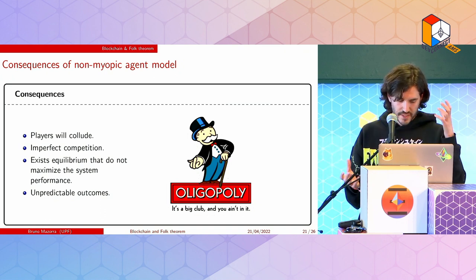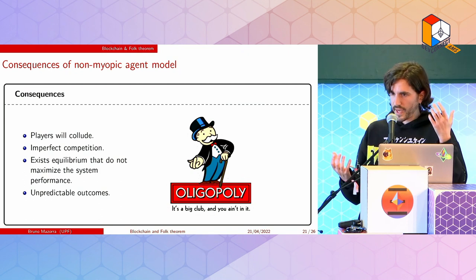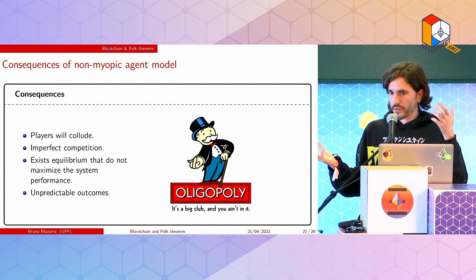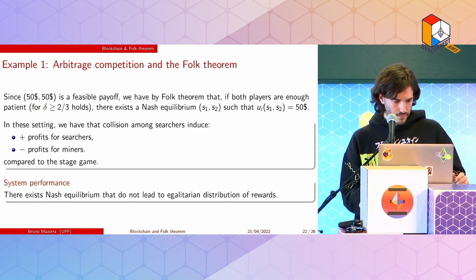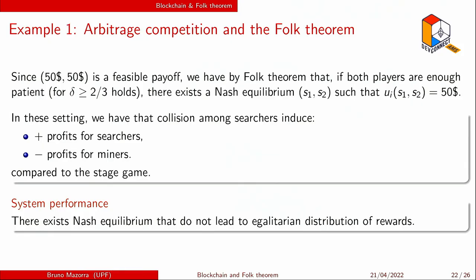The consequence of the theorem is that players will likely collude — the perfect competition we had at the beginning won't exist anymore. There exist equilibria that would not give the system performance we would like; for example in the layer-2 protocol we would have very unpredictable outcomes and the mechanism design we're building won't enforce the desired actions. Revisiting the first example with folk theorem in hand: there exist strategies where players split the arbitrage opportunity, and since this is a Nash equilibrium, neither will deviate.